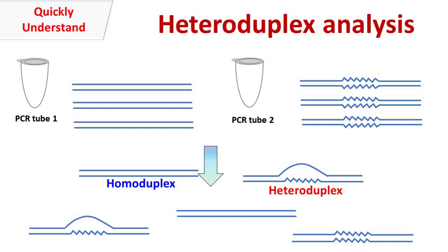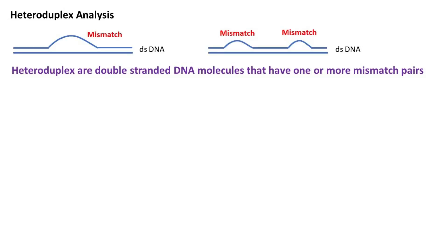Hey guys, Quickback Chemistry Basics here. Let's talk about heteroduplex analysis. Heteroduplex are double-stranded DNA molecules that have one or more mismatched pairs.